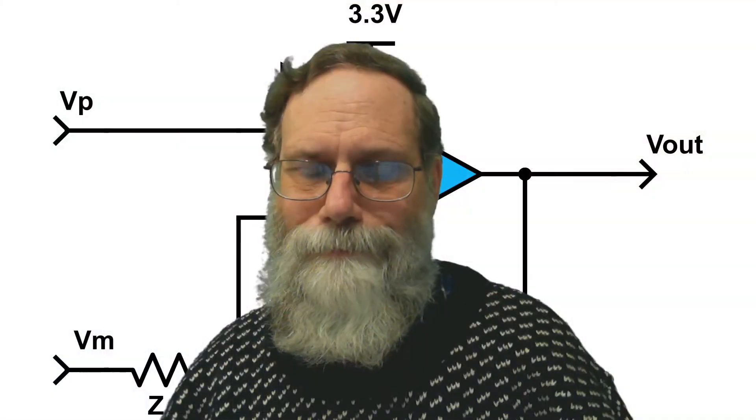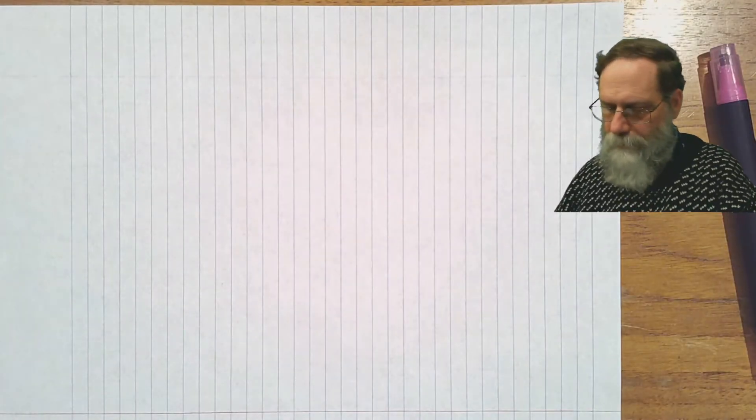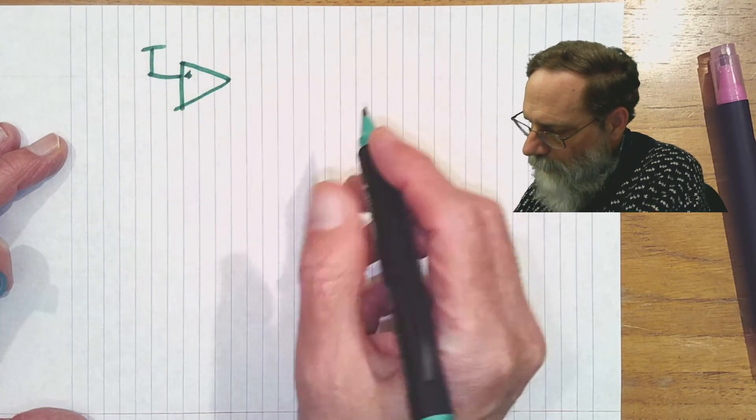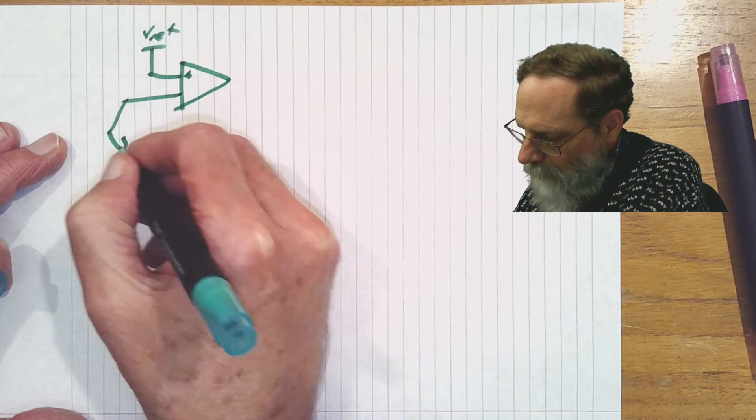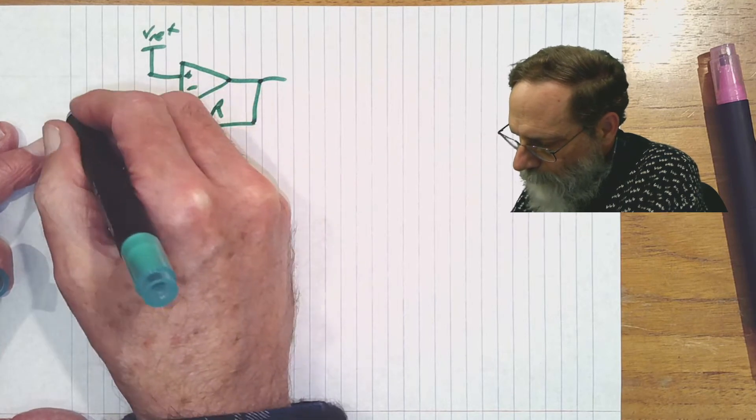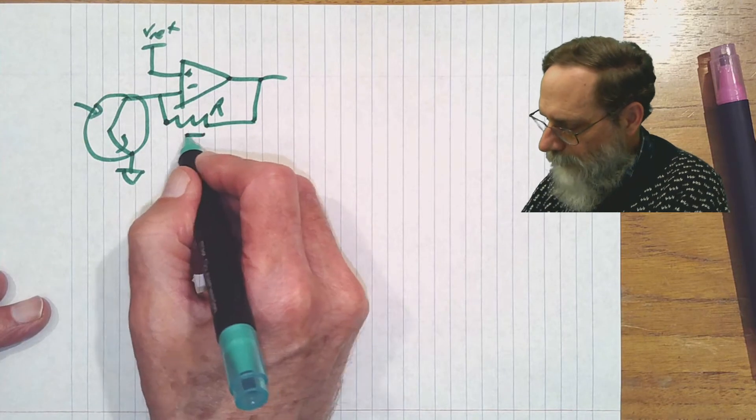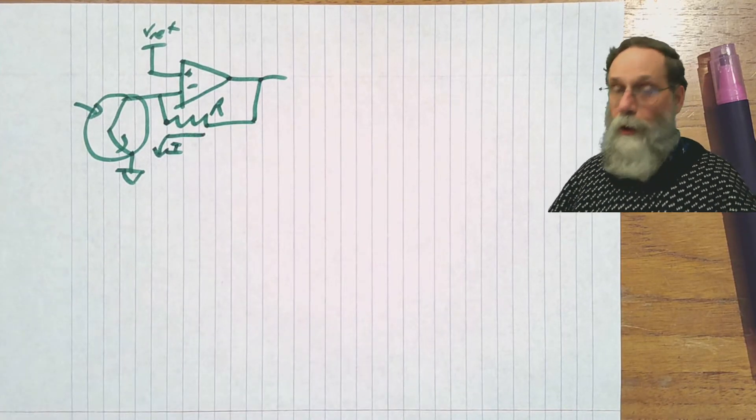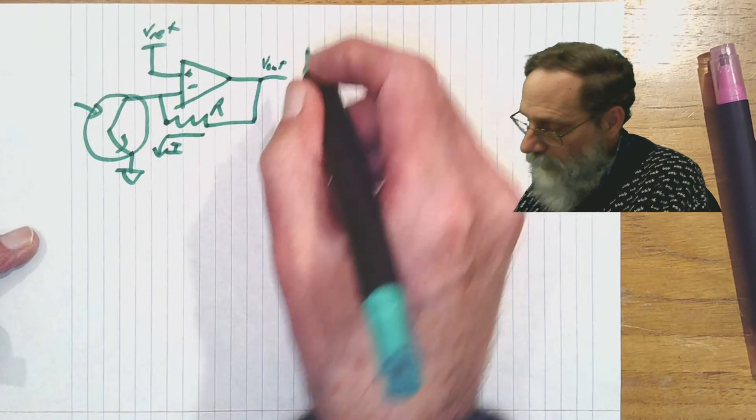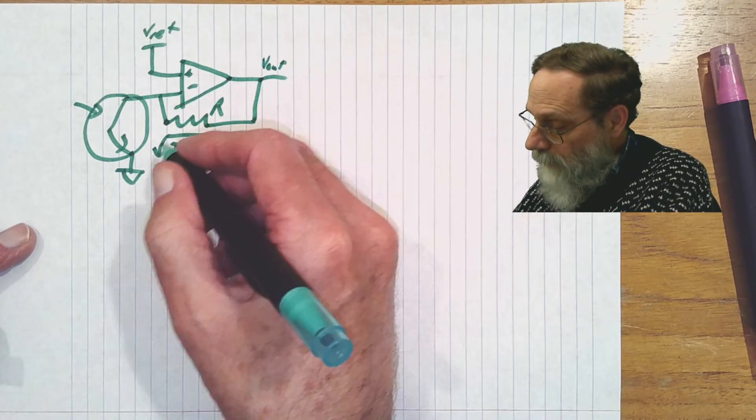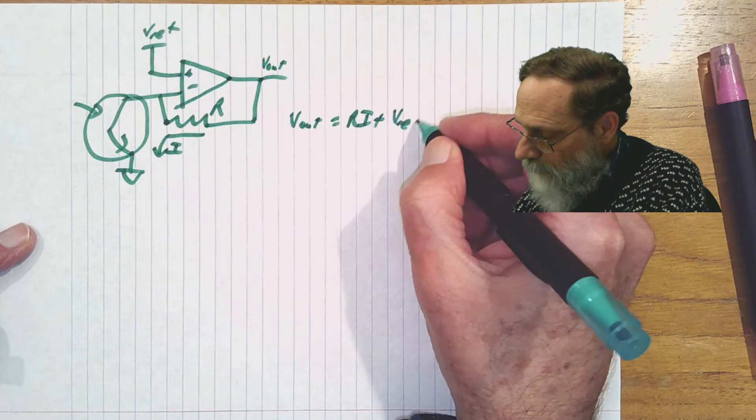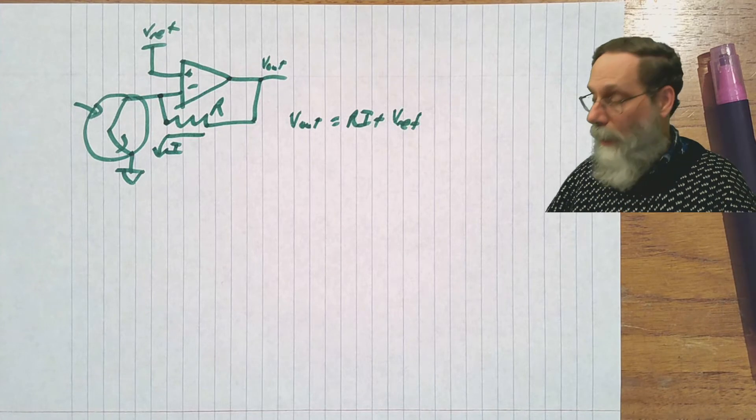So the problem is, if we use the standard circuit, let's switch over to the desk. If we use the standard circuit that we've been doing for things like phototransistors, and that is taking a transimpedance amplifier. Here's our phototransistor. And we have current flowing this way. The voltage across the phototransistor is just going to be the copy of the bias voltage here, Vref. The current is going to be whatever the photocurrent is for that phototransistor. And the output voltage is just going to be R times I plus Vref, because the node here of the negative side is being held at Vref. So our gain is R.